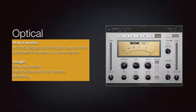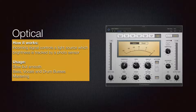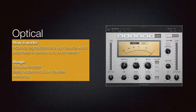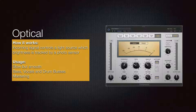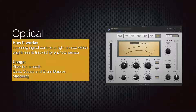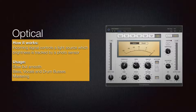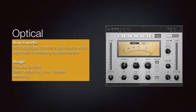Optical compressors work on a light source whose brightness determines how much compression you're getting. They are usually a little slower but very smooth and transparent. They work great on bass and vocals, and are great for mastering on the main output.